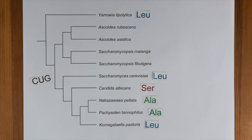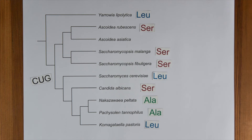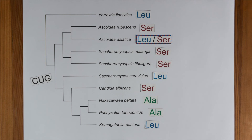And we found some more species translating CTG as serine. The most exciting fact we found in Ascoidea asiatica. This yeast translates CTG into both leucine and serine. In its proteome, we found a truly random translation of CTG with a ratio of 1 to 1.